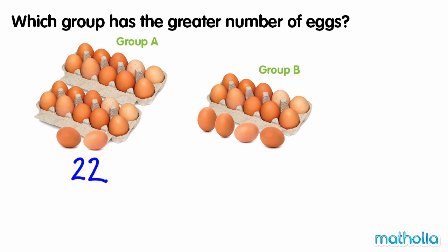In group B, there is one carton of ten eggs and four single eggs. One ten and four ones make fourteen. There are fourteen eggs in group B.